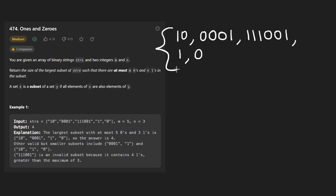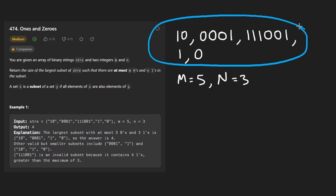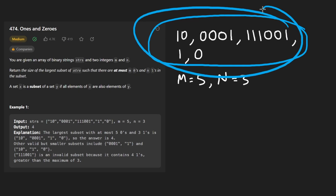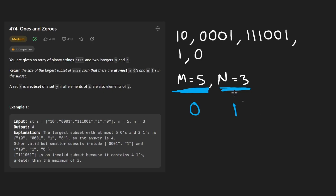So suppose these are the binary strings that we're given — there's five of them. Each of them is composed of just ones and zeros, and we're given a couple integers. Let's say m in this case is 5 and n in this case is 3, just like in this example. m corresponds to zeros and n corresponds to ones in our input strings.